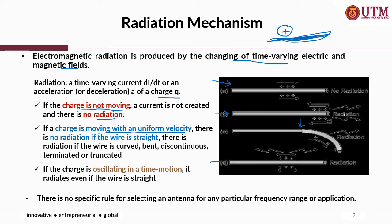And lastly, if there is charge oscillating in time motion — oscillation — radiation exists although the wire is straight. There are no specific rules for selecting an antenna for any particular frequency range or application, but the antenna is designed based on the intended application.